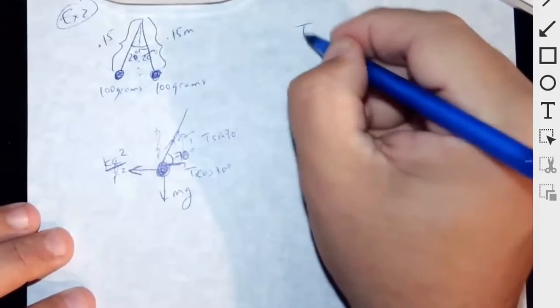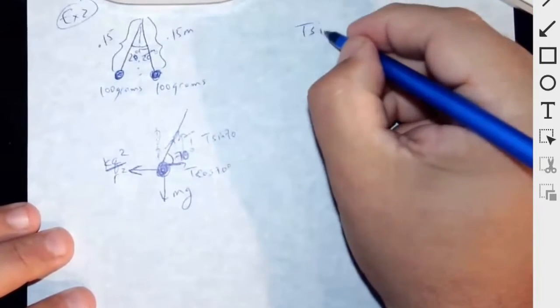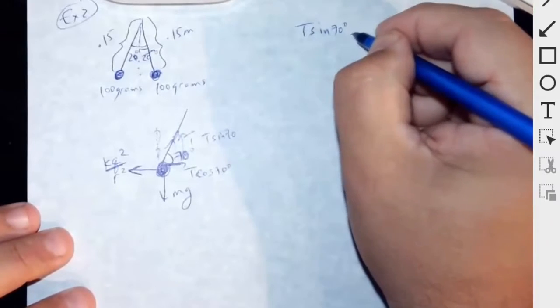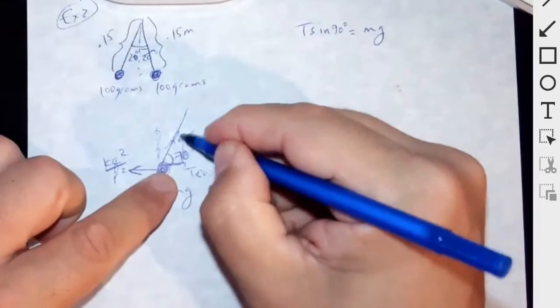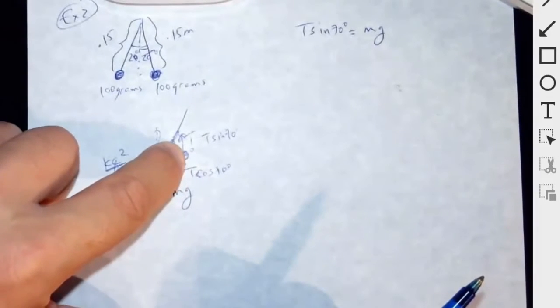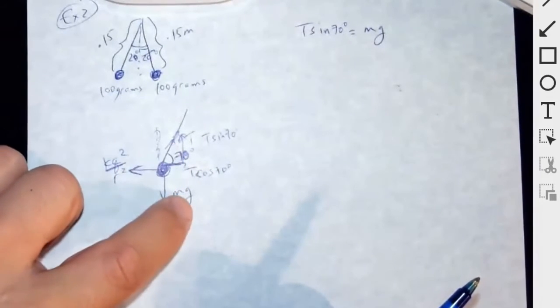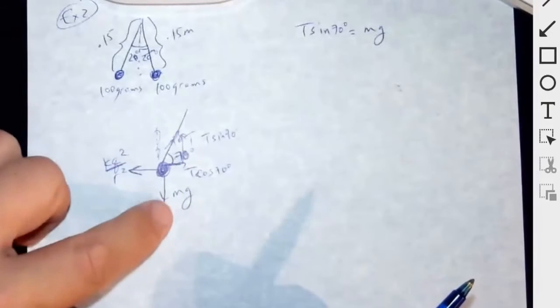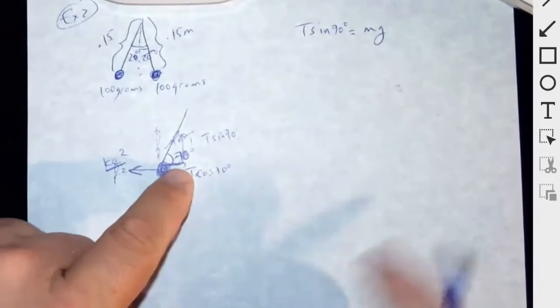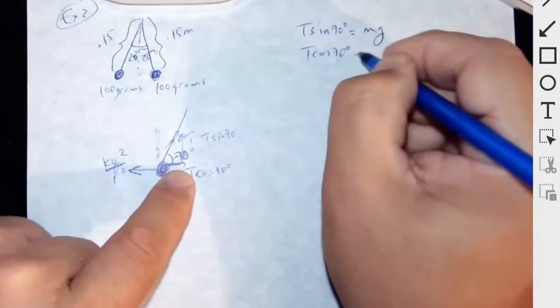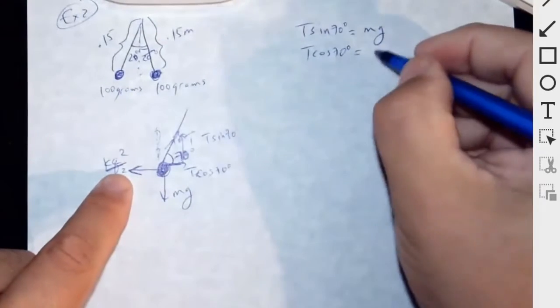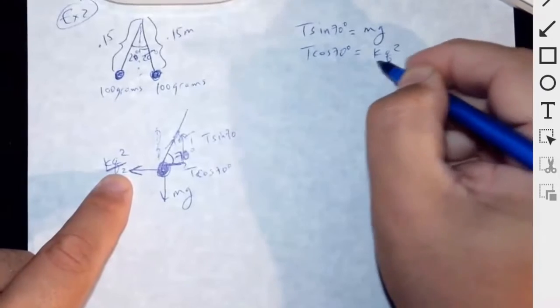So then I'm going to have T sine of 70 is equal to Mg. It's always the vertical component of the tension, right, that supports the weight. So this is equal to the weight and then the horizontal component of the tension, T cosine of 70, is equal to the force KQ squared over R squared.